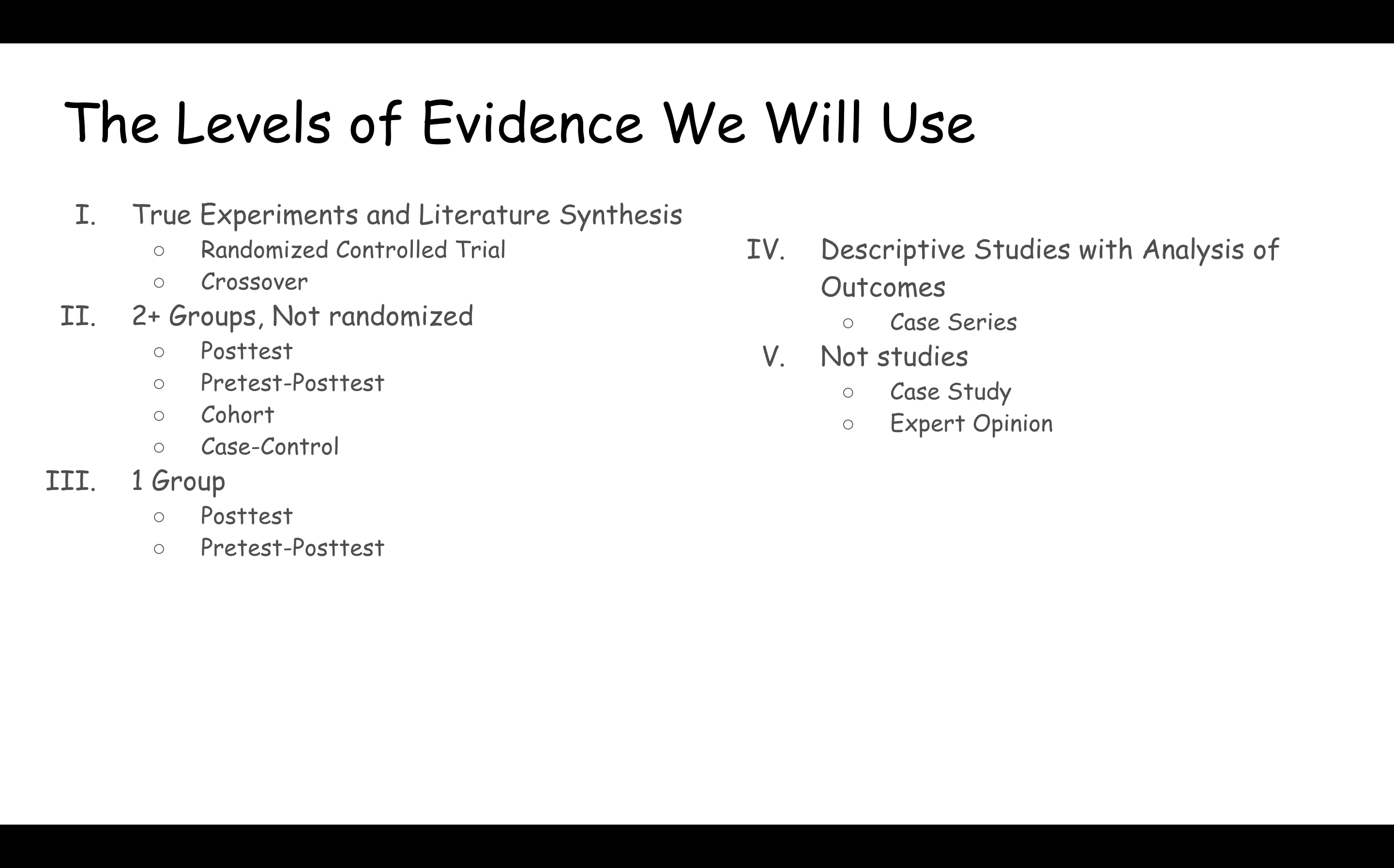Level two involves two groups of subjects but not randomized. Level three involves one group of subjects. And those three levels of evidence are primarily what we're going to be concerned with in this class.